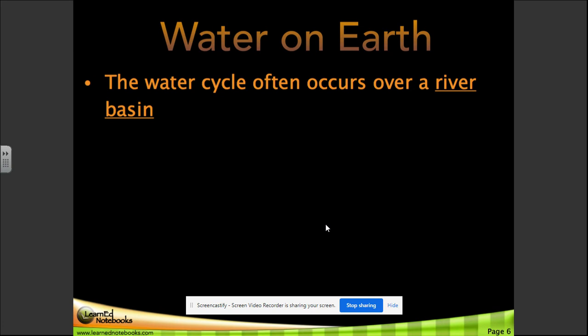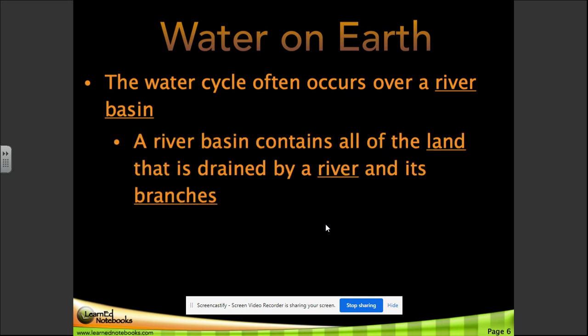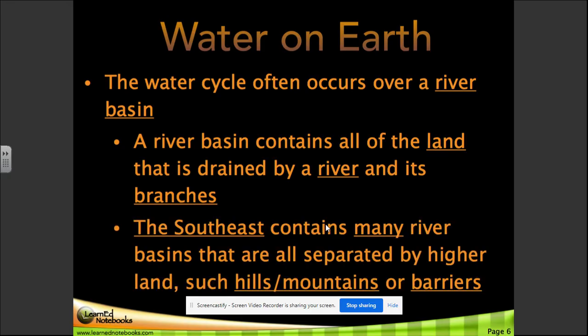The water cycle often occurs over a river basin. A river basin contains all of the land that is drained by a river and its branches. The southeast contains many river basins that are all separated by higher land such as hills, mountains, or barriers.